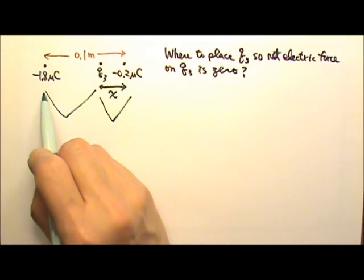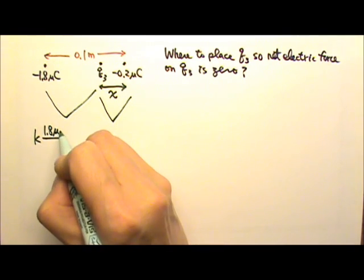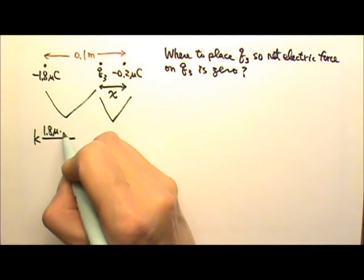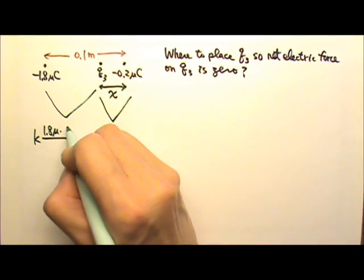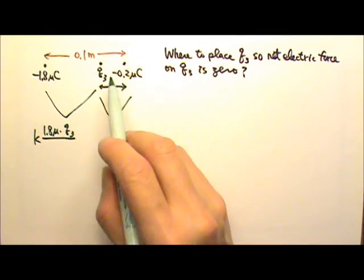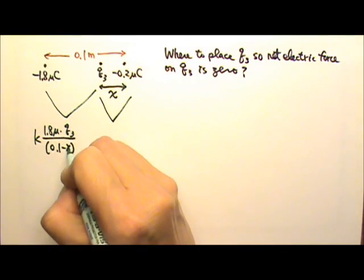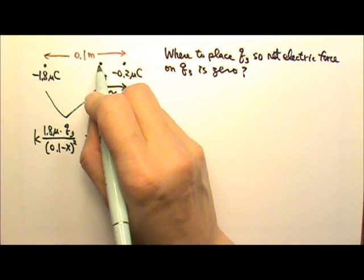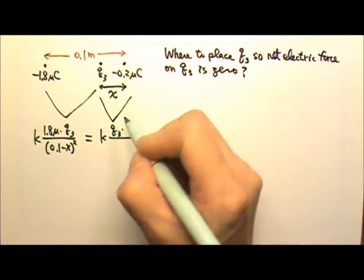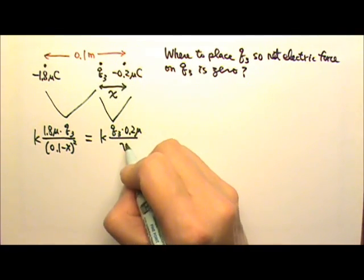So let's see, the force between these two will be KQ1, I'm just going to write 1.8 micro, I didn't bother to plug in the K or micro over here because I know they're going to cancel. Times Q3 divided by their distance squared. If that's 0.1, this is x, what's the distance over here? It is 0.1 minus x. And then the electric force between those two charges will be KQ3 times 0.2 micro, divided by the distance x squared.